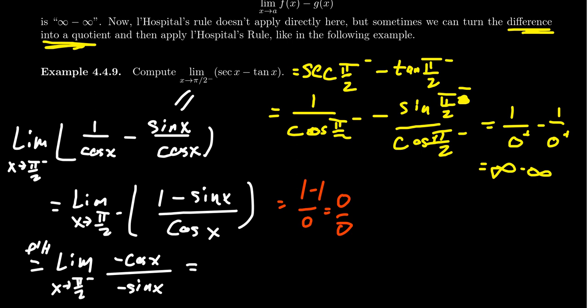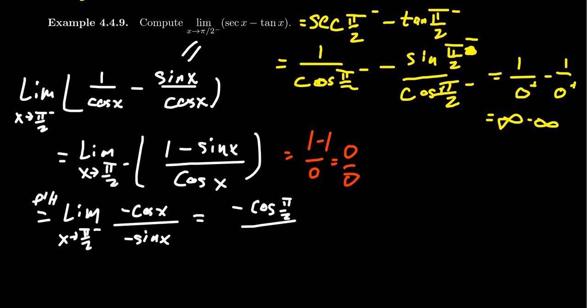And now plug in π/2. You're going to see what happens. You're going to get negative cosine of π/2 over negative sine of π/2. Cosine of π/2, like we observed earlier, is 0. Sine of π/2 is 1. So you get negative 0 over negative 1. This is the same thing as 0.